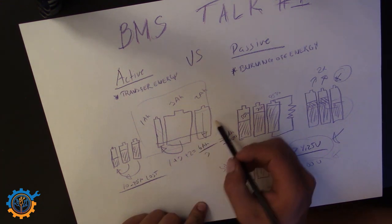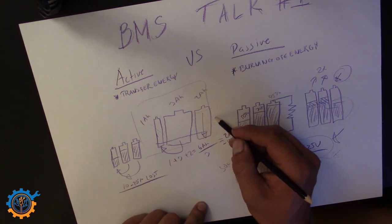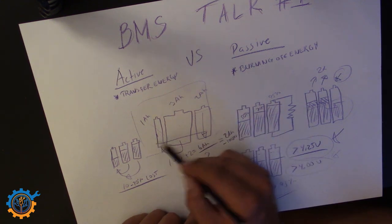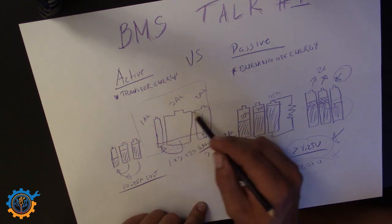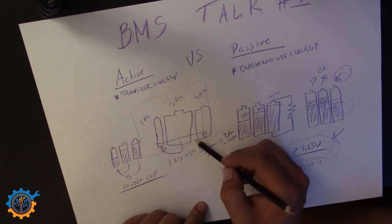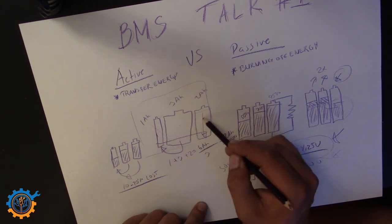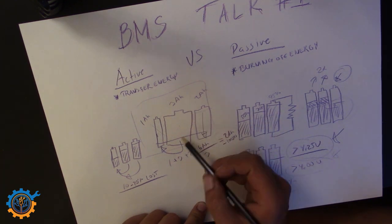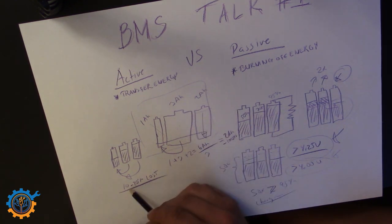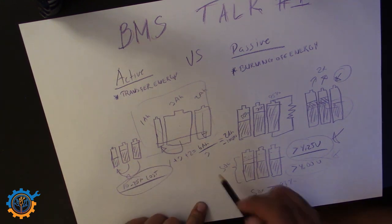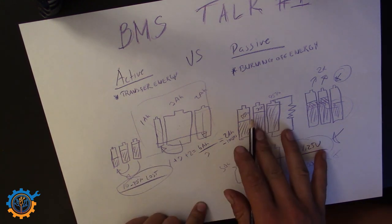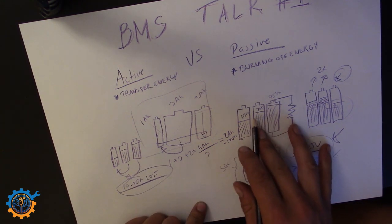If you are going between 70 and 90% state of charge and constantly moving energy around just to have cells 100% equal, you are all the time wasting energy back and forth. Meanwhile, passive balancing does nothing — which is exactly what you want.